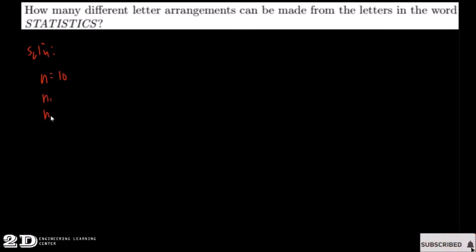First, we need to find n — how many letters are in the word. Counting the letters in 'statistics': 1, 2, 3, 4, 5, 6, 7, 8, 9, 10. So n = 10. Then we identify the letters that are repeated.